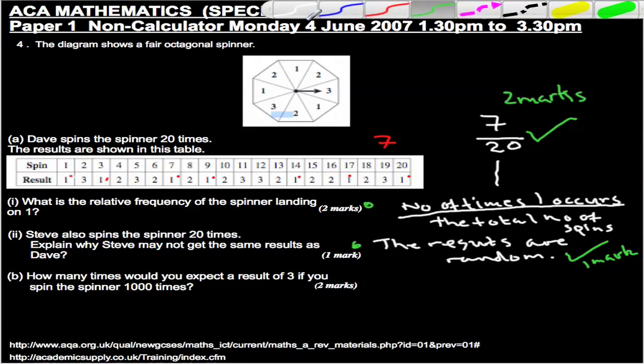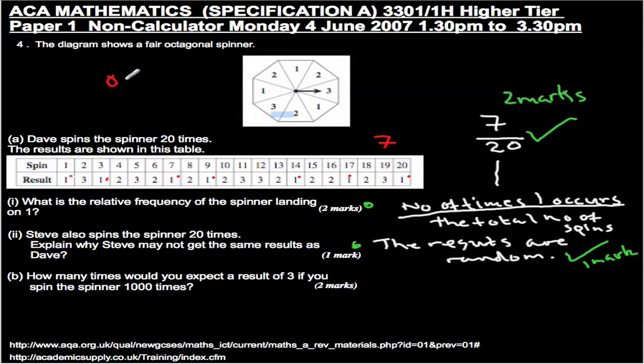Okay, let's have a look at the last question. How many times would you expect a result of 3 if you spun the spinner 1,000 times? Okay, let's have a look at the spinner. Well, the spinner is octagonal. Octagonal actually means 8. So let's count.